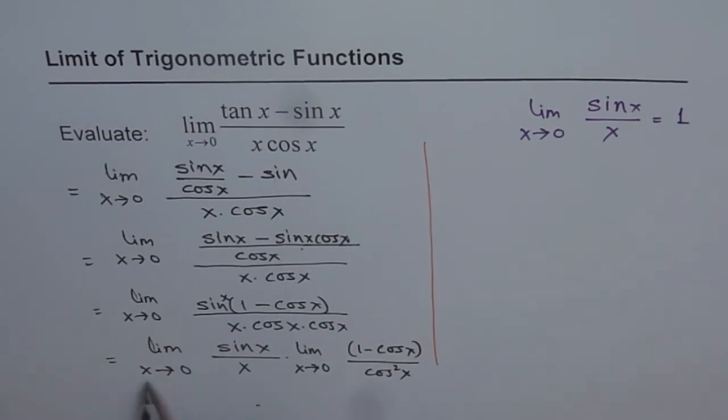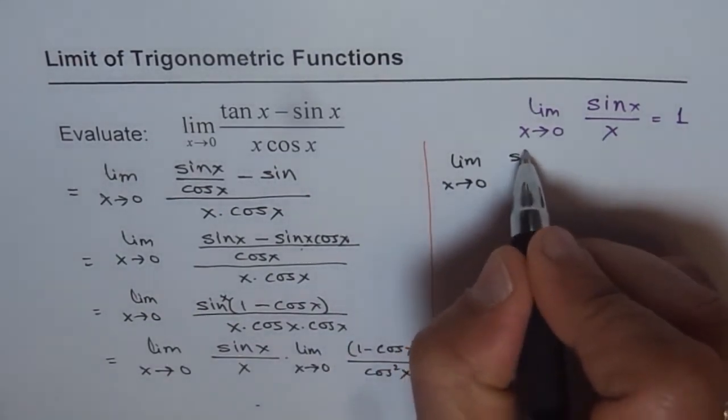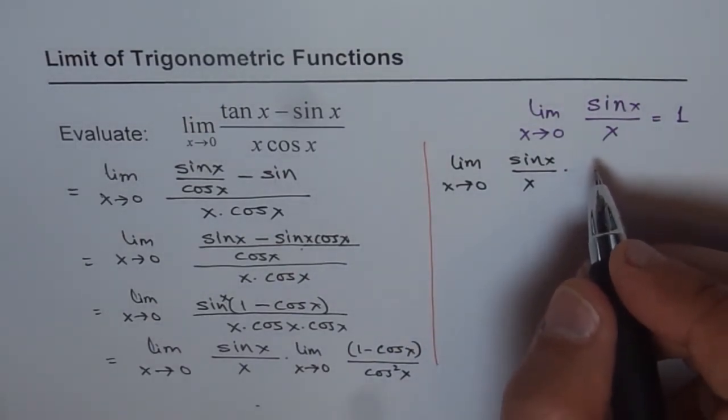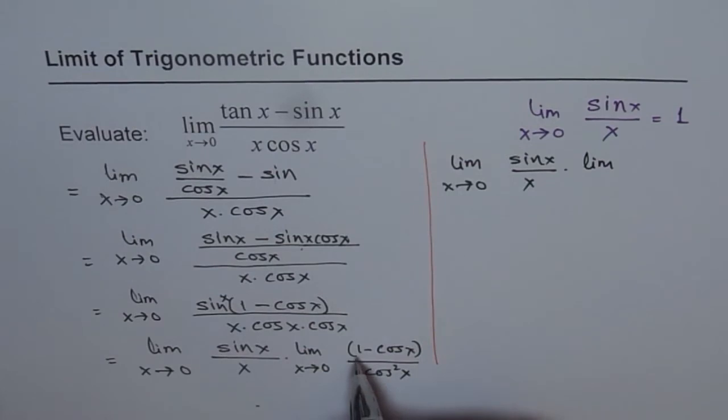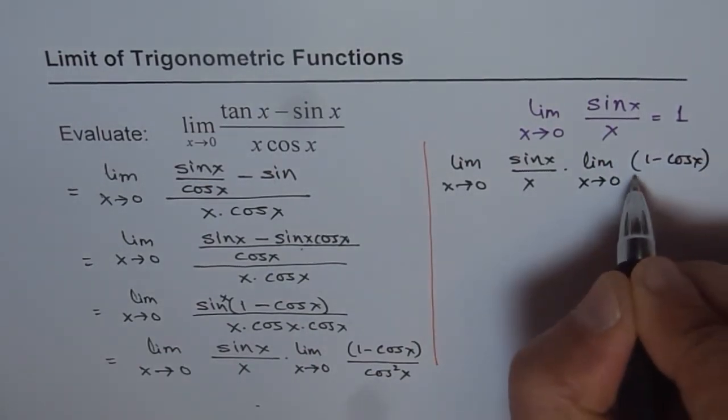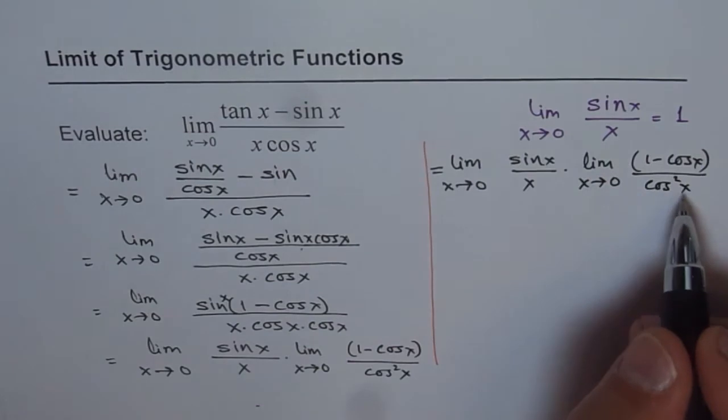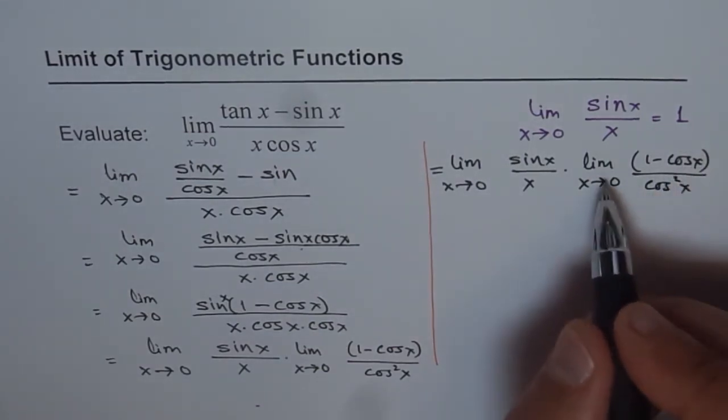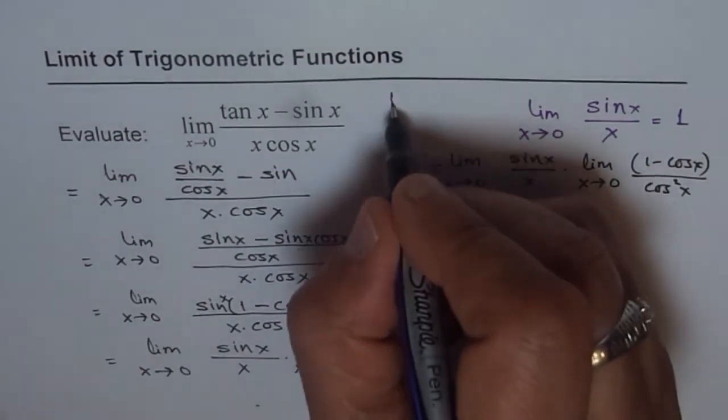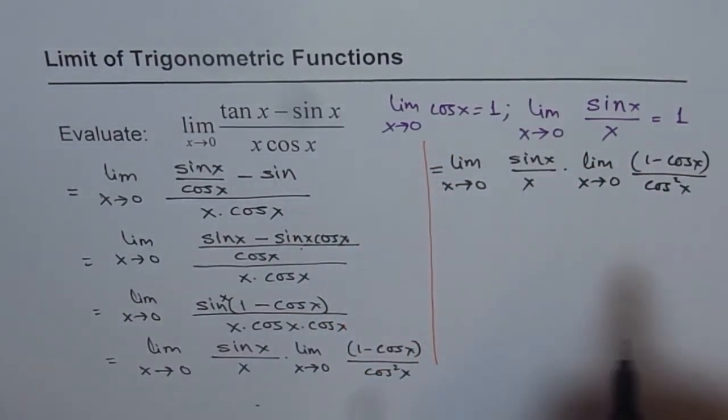Now let's go ahead and then we'll write this as limit of x approaches 0 for sine x over x. I'm just rewriting this, and then we have on this side limit of 1 minus cos x over cos square x. Now if I substitute x as 0 here, cos of 0 is 1. We know that limit of sine x over x when x approaches 0 is 1, and we also know that limit for x approaching 0 for cos x is equal to 1. So we'll utilize that part here.